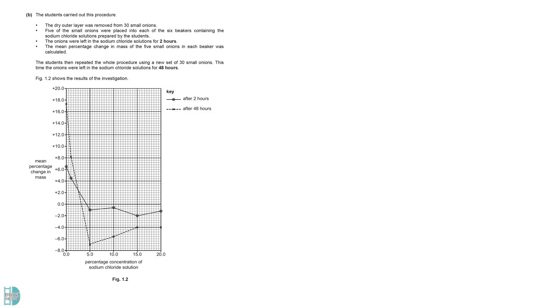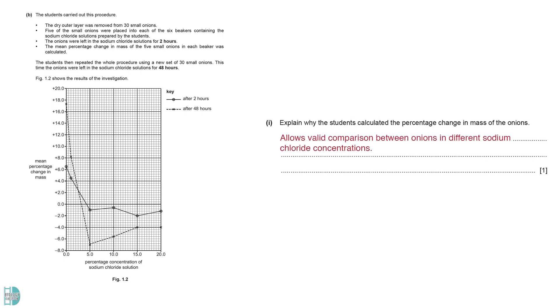B shows the results of the investigation. The students calculated the percentage change in mass for a valid comparison. This is because the initial mass of onions is not constant. If we compare the final mass directly, we might misinterpret that the larger specimens gain more mass than the smaller ones.